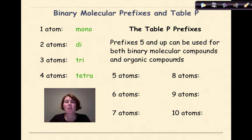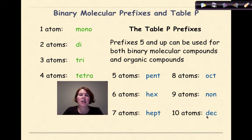Basically from 5 to 10, to name both binary molecular compounds. And when we get to organic, we're going to use those also. So 5 is pent, 6 is hex, 7 is hept, 8 is oct, 9 is non, and 10 is dec.